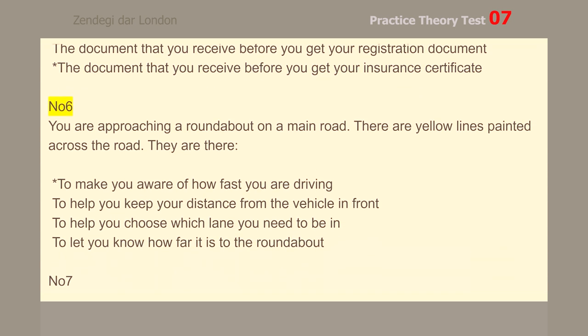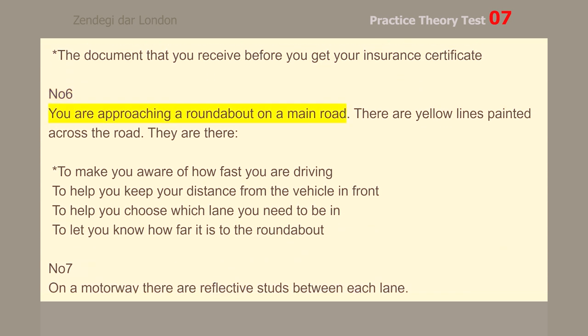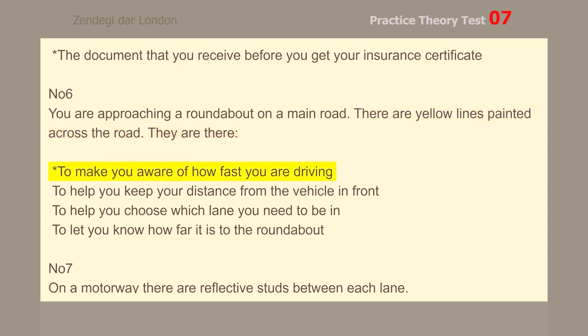Number 6. You are approaching a roundabout on a main road. There are yellow lines painted across the road. They are there to make you aware of how fast you are driving.